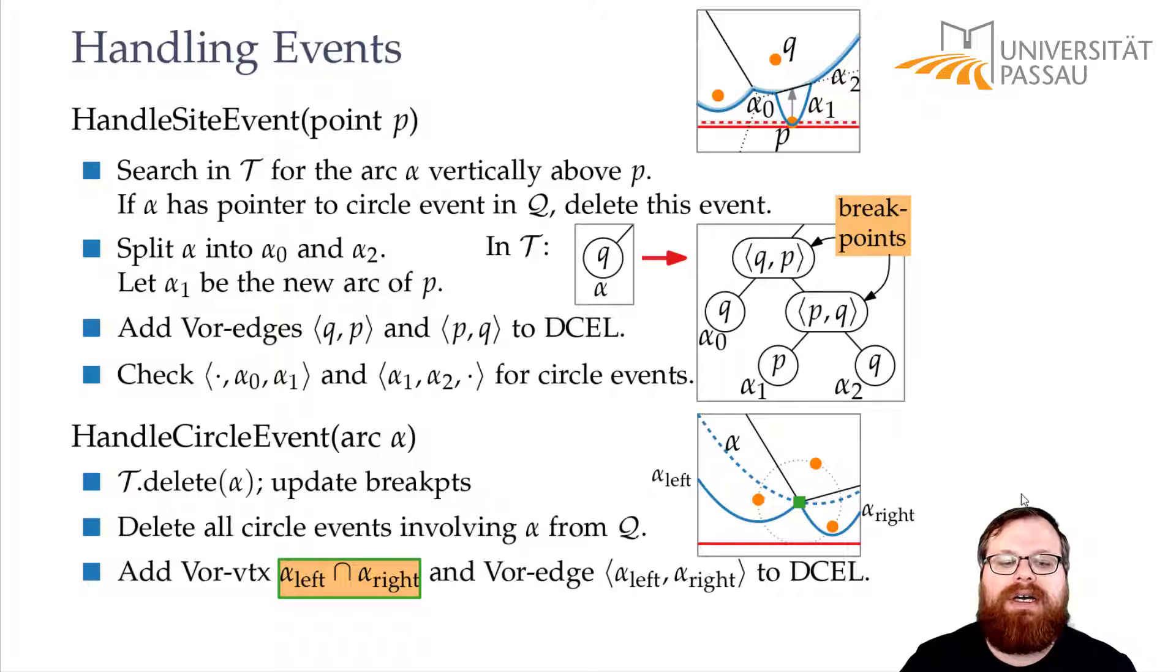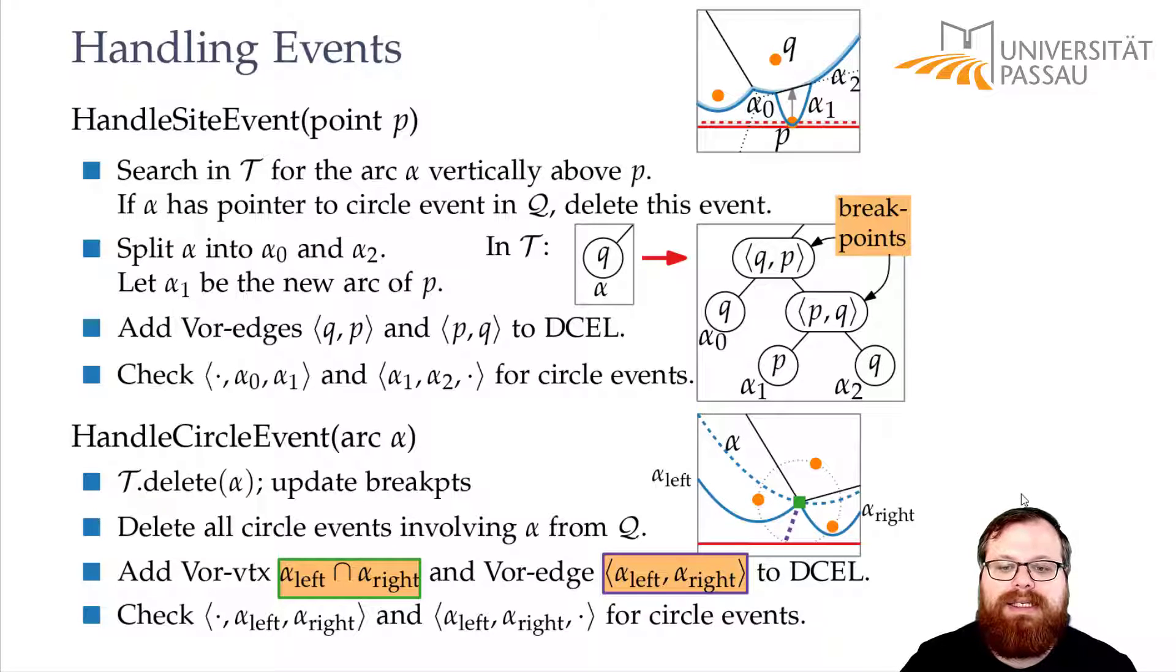Then we've updated the Voronoi diagram. And we only have to find, again, new circle events, which is between alpha left and alpha right and whatever arc is here and alpha left, alpha right and whatever arc is here on the right side.